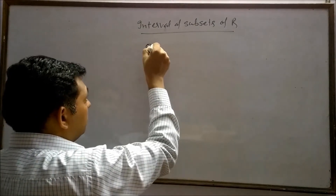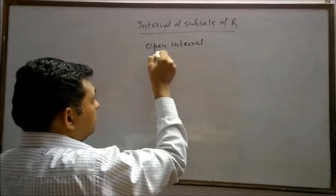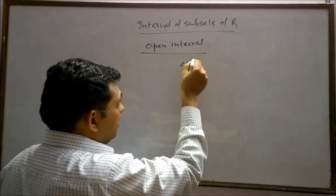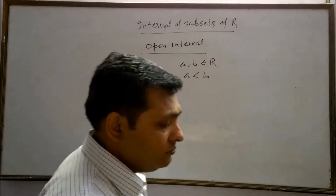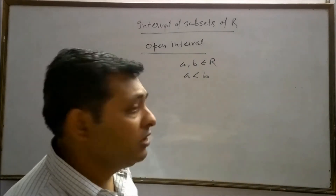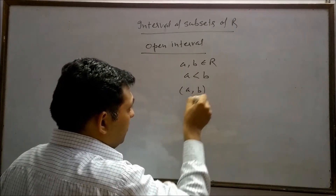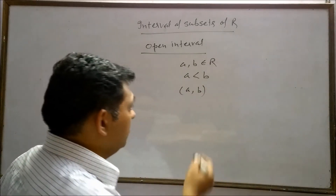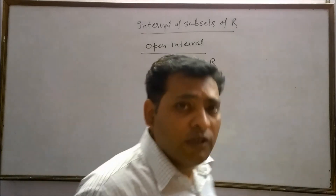The first type is the open interval. For example, suppose there are two numbers a and b which belong to the real numbers, and a is smaller than b. If we want to make a set of all real numbers lying between a and b, this can be represented as (a, b). These brackets denote open interval, which means all numbers between a and b are included, but a and b themselves are not included in the set.